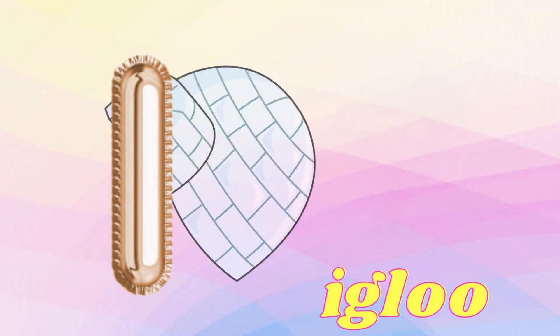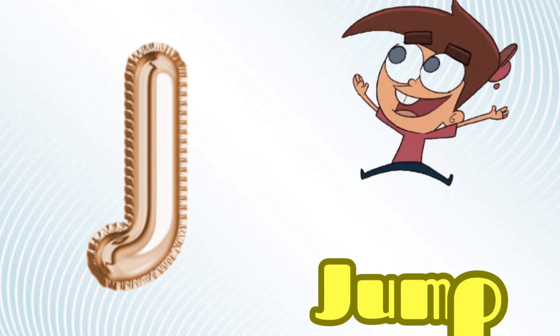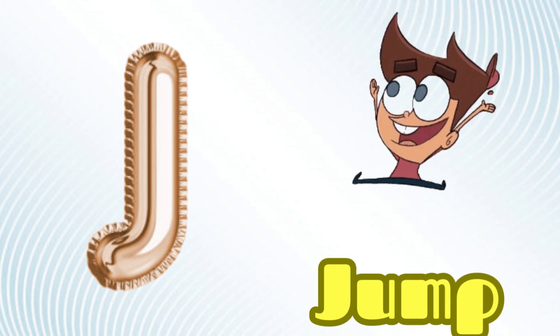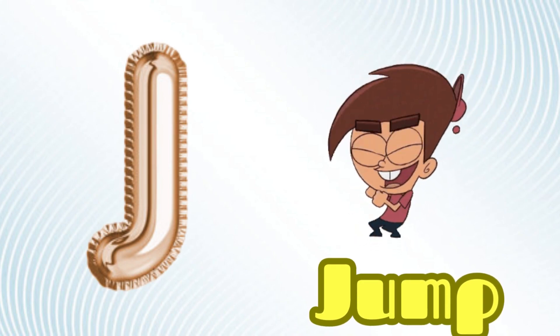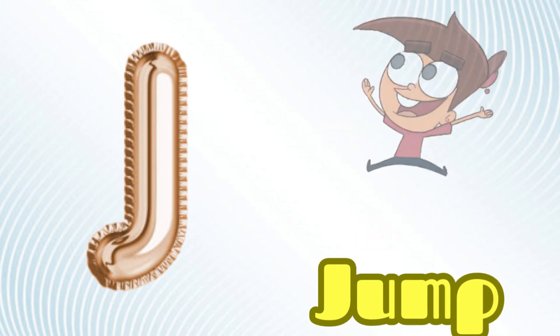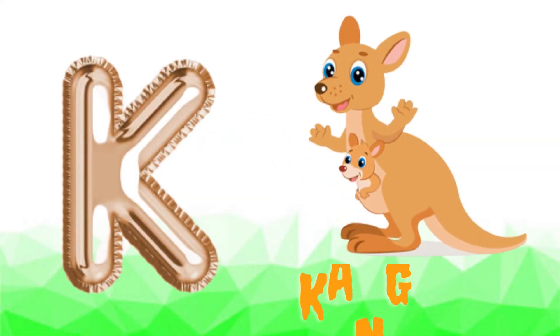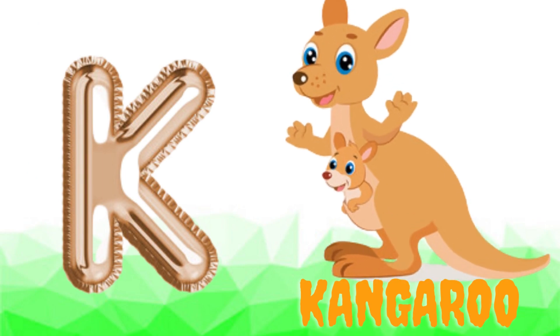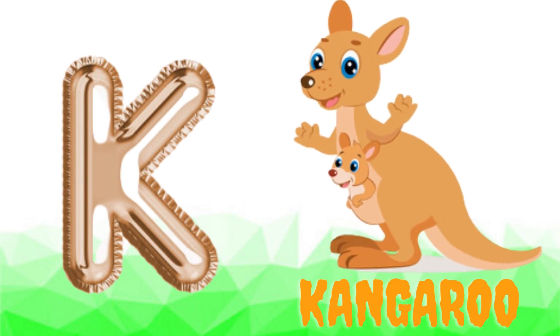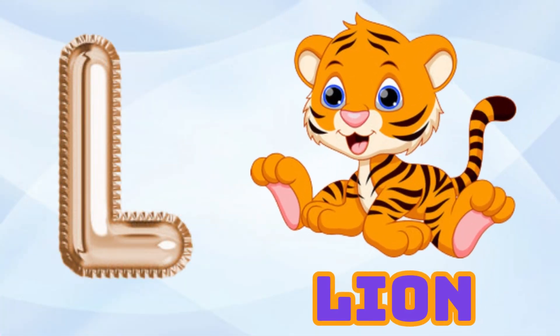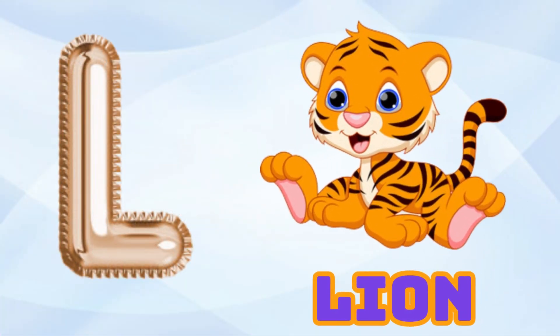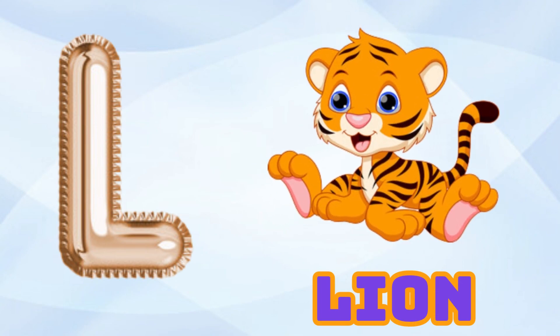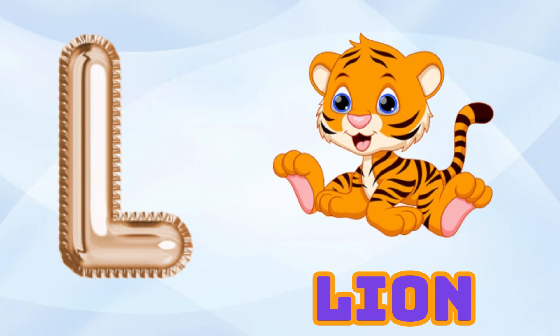I-I-Igloo. J is for jump, j-j-jump. K is for kangaroo, k-k-kangaroo. L is for lion, l-l-lion.